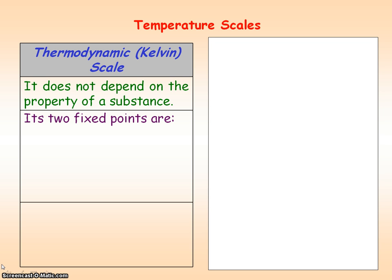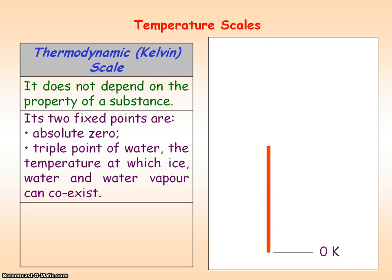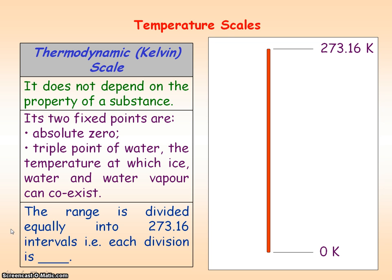The two fixed points for the thermodynamic scale are: first, absolute zero, and second, the triple point of water, which is the temperature at which all three states of water can exist—ice, water, and water vapor. That temperature is 273.16 Kelvin or 0.01 degrees C. The range is divided into 273.16 intervals to make each division one Kelvin.